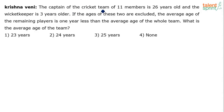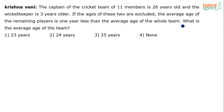The captain of a cricket team of 11 members is 26 years old and the wicketkeeper is 3 years older. If the ages of these two are excluded, the average age of the remaining players is one year less than the average age of the whole team. What is the average age of the team?